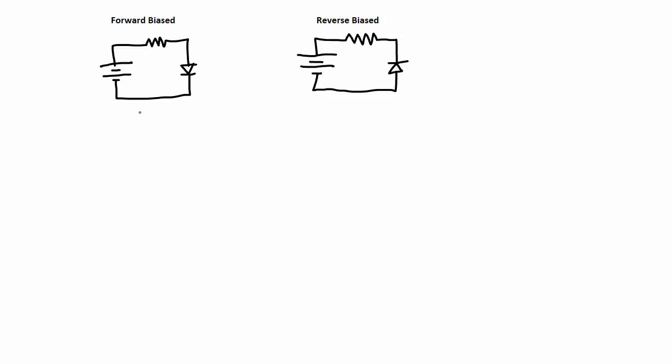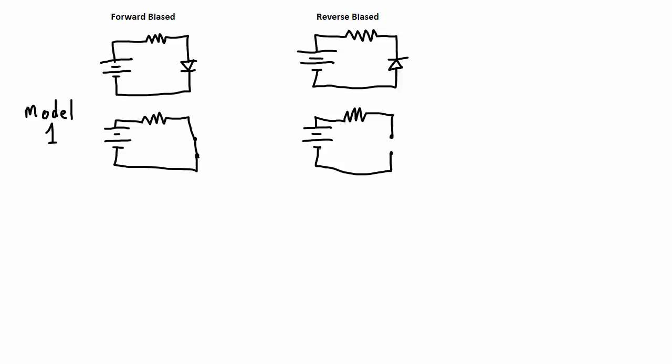Using those models, I'll look at the voltage across components in the circuit as well as the currents in the circuit. In Model 1, the diode in the forward biased configuration is modeled as a short. And in the reverse biased configuration, it's modeled as an open.